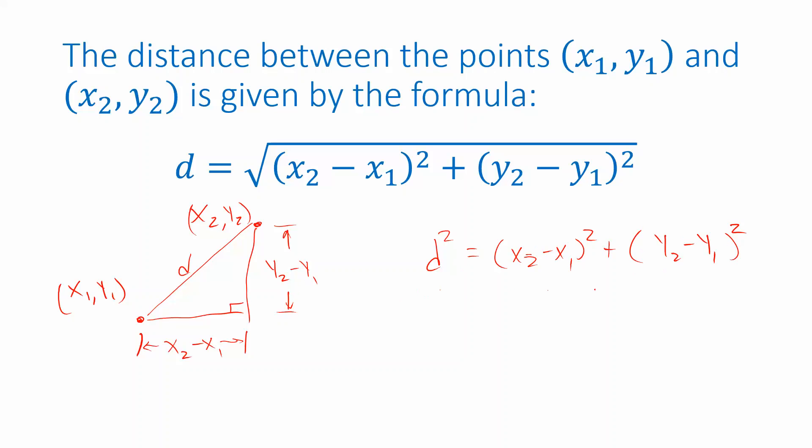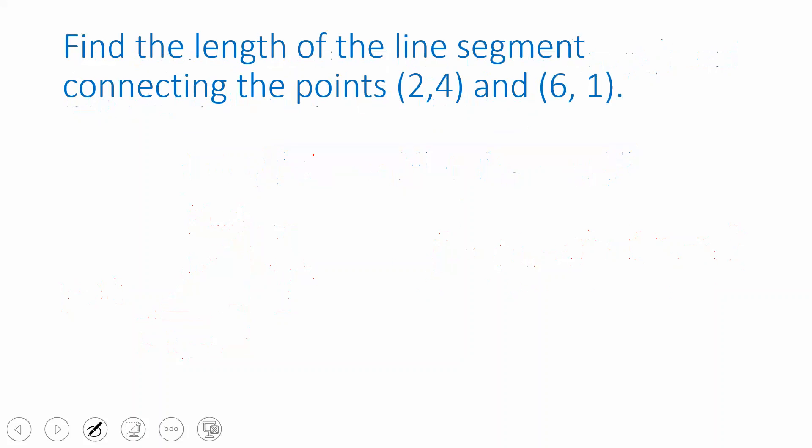So if you take the square root of this right side to get the positive value of d, that's going to be the distance between those two points. So let's use this to answer a question. Let's find the length of the line segment that connects the points 2 comma 4 and 6 comma 1.